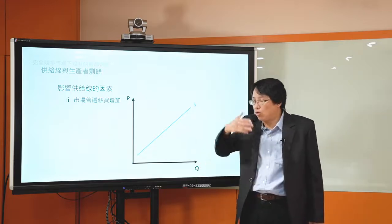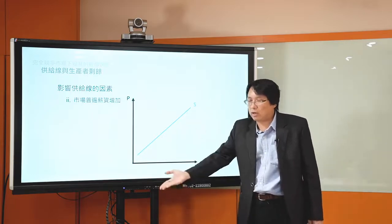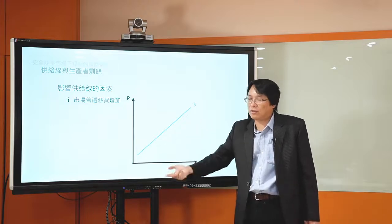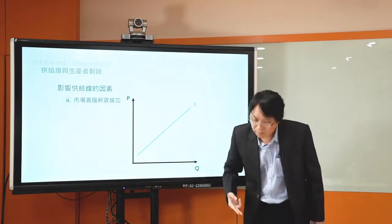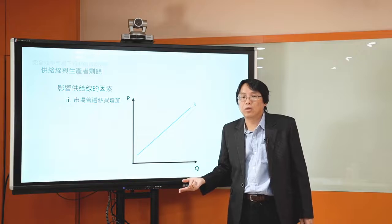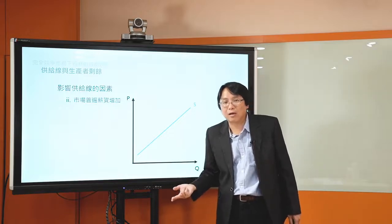你每多雇用一個勞動的時候，假設本來薪資是2萬5，現在變成3萬。你如果要多增加一單位產量，你就要多雇用勞動力。本來多增加成本是2萬5，現在增加成本變成是3萬。所以你的邊際成本會增加。如果普遍市場薪資從2萬5變成3萬，你現在要多增加產量、多雇用勞動力，本來多增加成本是2萬5，現在變成3萬，邊際成本因此上升。